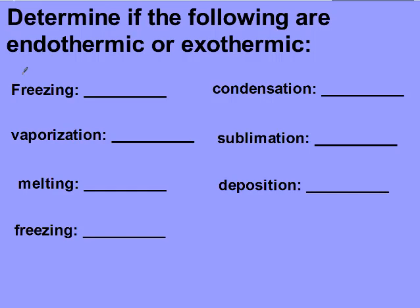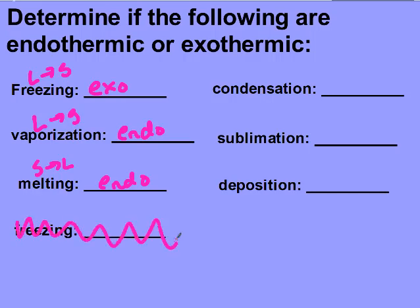So, the first one, freezing, was going from a liquid to a solid. So, you should have said exo, because the particles are getting closer together. Vaporization is liquid to gas, so that one's going to be endothermic. Melting was solid to liquid, so the particles are getting further apart, so that's endothermic. Condensation is gas to liquid, and so that one is exothermic. The particles are getting closer together.